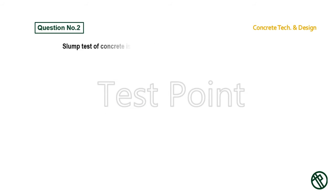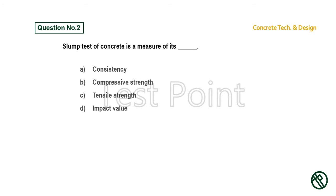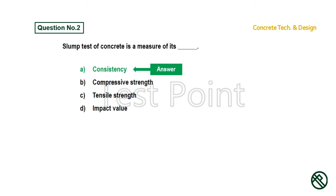Question number 2: Slump test of concrete is a measure of its — Option A: Consistency. Option B: Compressive strength. Option C: Tensile strength. Option D: Impact value. Answer is Option A: Consistency.